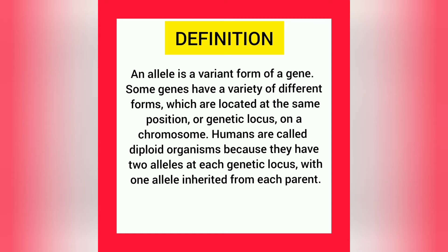The definition of Allele is: an Allele is a variant form of a gene. Some genes have a variety of different forms which are located at the same position or genetic locus on a chromosome. Humans are called diploid organisms because they have two Alleles at each genetic locus, with one Allele inherited from each parent.